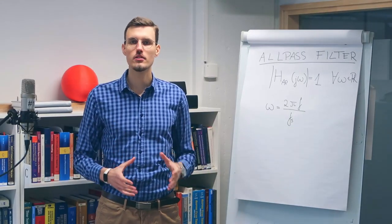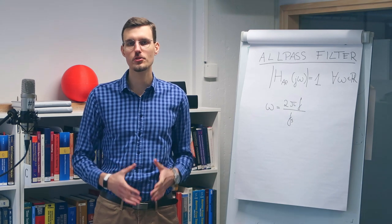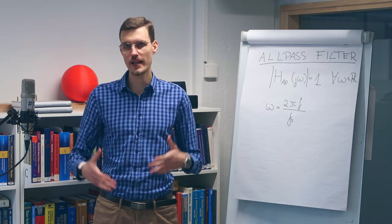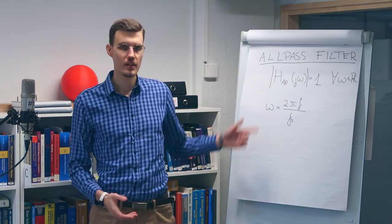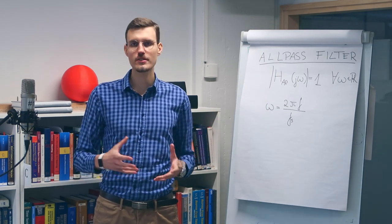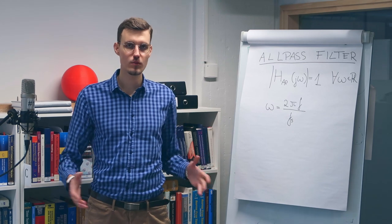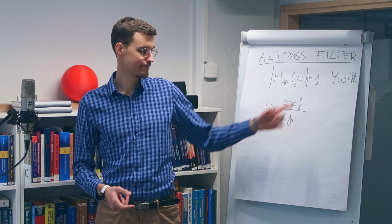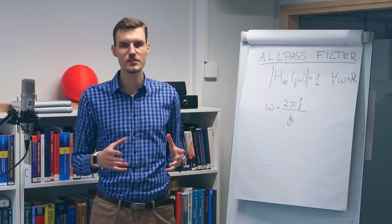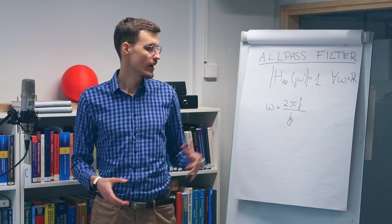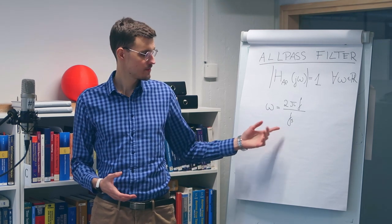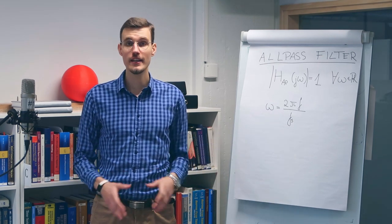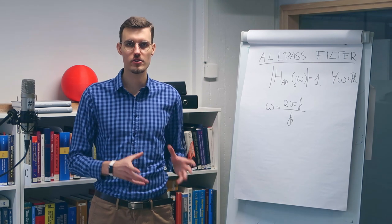So what exactly is an ALLPASS filter? An ALLPASS filter is a filter which does not change the magnitude of any frequency component that passes through it. So if we have its transfer function, then the magnitude of this transfer function across all frequencies will be 1. And here omega is 2 pi f over fs, where f is the frequency in Hertz and fs is the sampling rate in Hertz.